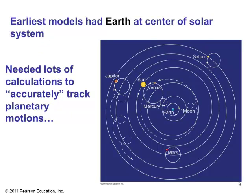Based on those observations, astronomers came up with models. The earliest models had the Earth at the center of the solar system — it makes sense to think we're in the middle of everything. The only problem was that you needed lots of complicated calculations to track planetary motions accurately. This is what we call the Ptolemaic model, based on Ptolemy's geocentric model of the inner solar system. Geocentric means with the Earth in the center, and this model was very widespread prior to the Renaissance.